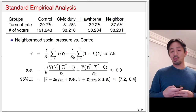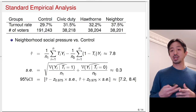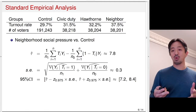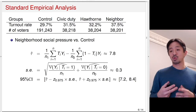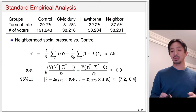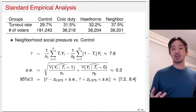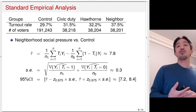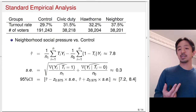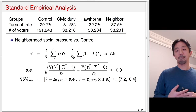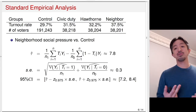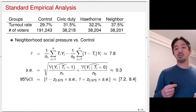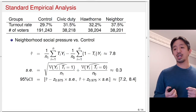We can compute the standard error using the usual formula: take the variance of the treatment group outcome divided by n₁ (treatment group size), add the variance of the control group outcome divided by n₀ (control group size), then take the square root. In this case, the standard error is about 0.3 percentage points. We construct the 95% confidence interval using a critical value of 1.96 times the standard error, added and subtracted from the point estimate, giving approximately 7.2 to 8.4 percentage points.